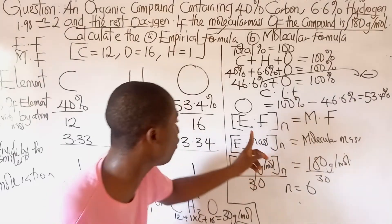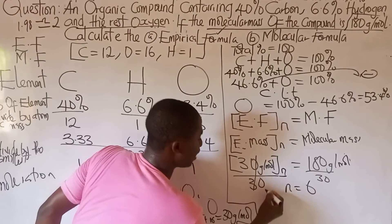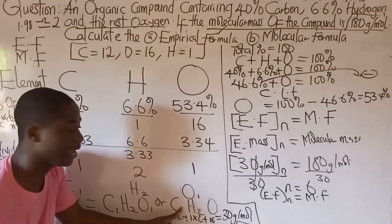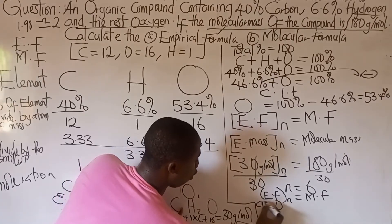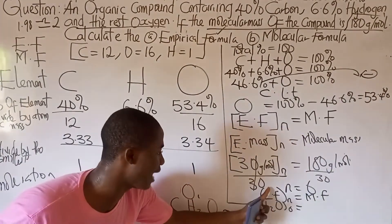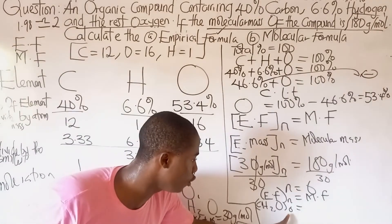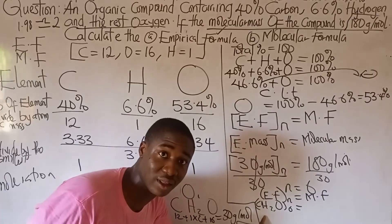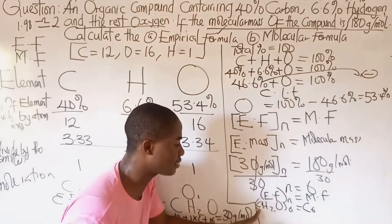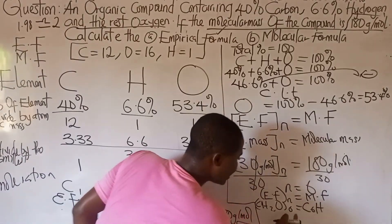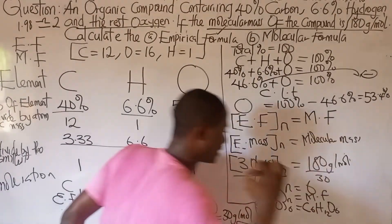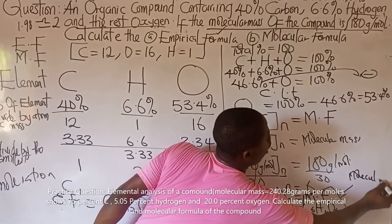Now we get our molecular formula. Going back to the formula: (empirical formula)ⁿ = molecular formula. Our empirical formula is CH₂O and our n value is 6. Multiplying through the bracket: C × 6 = C₆, H × 6 times 2 = H₁₂, O × 6 = O₆. The molecular formula of the compound is C₆H₁₂O₆.